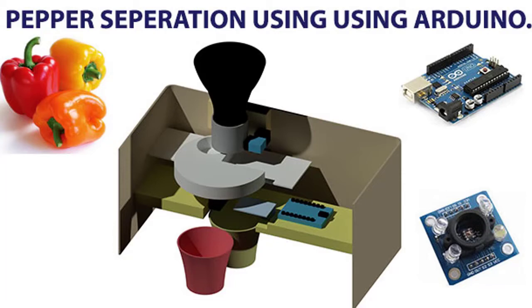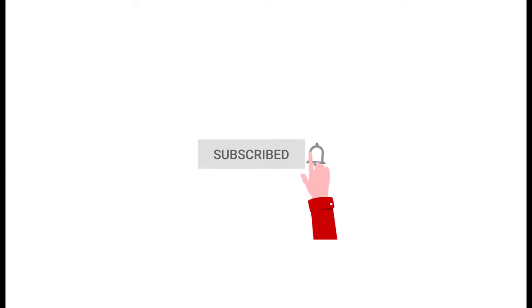So in this project, we're going to be working on building a machine that will be used to separate a ripe pepper from an unripe pepper. Please do not forget to subscribe to my channel.